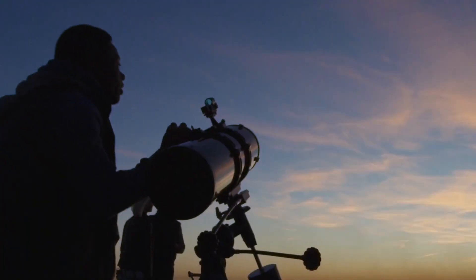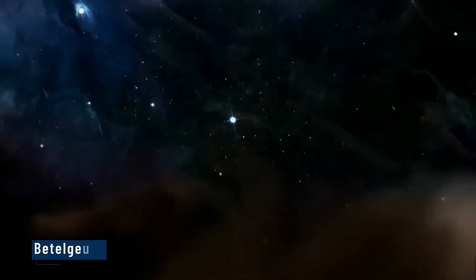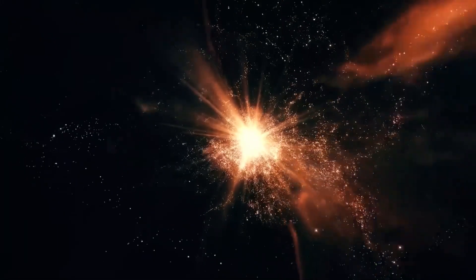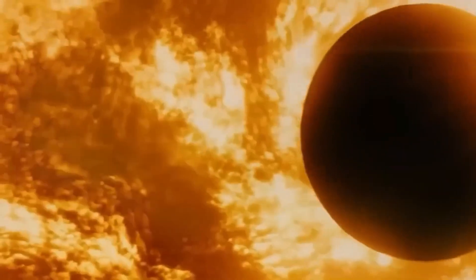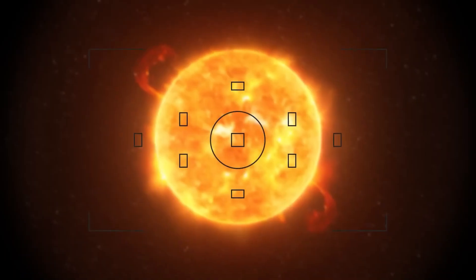If Betelgeuse were to take the place of our sun, its edges would extend all the way to Jupiter's orbit. But Betelgeuse is far from middle-aged. It's ten million years old, and could meet its fiery end in a supernova explosion sooner than we think.